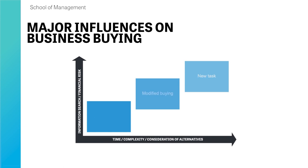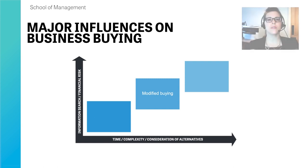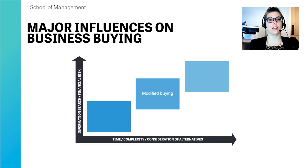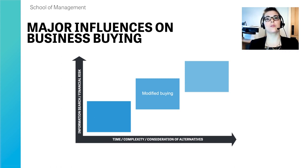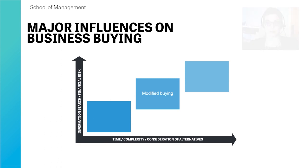Once you move to a modified buying task — for example, buying your second car — you build on prior knowledge. You know what worked and what didn't, have a better understanding of your requirements, and may decide to switch from one brand to another, such as moving from a Kia to a Mitsubishi. You then evaluate suppliers to see how a new product might fulfill your needs better than the last.